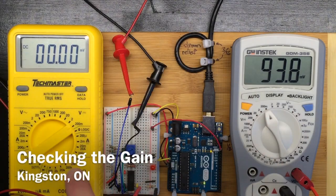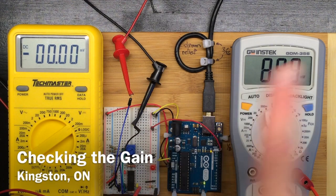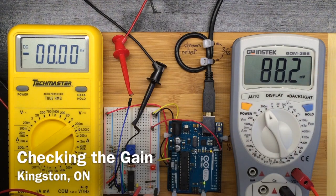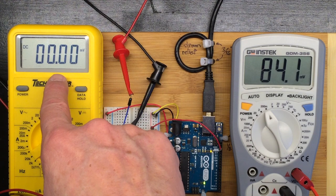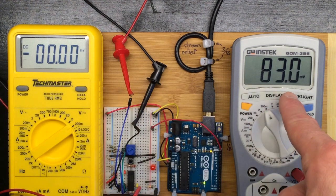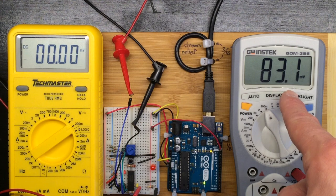With this meter attached to the input of the amplifier, and this meter attached to the output of the amplifier, I can see that when I've got zero volts, give or take, going in...